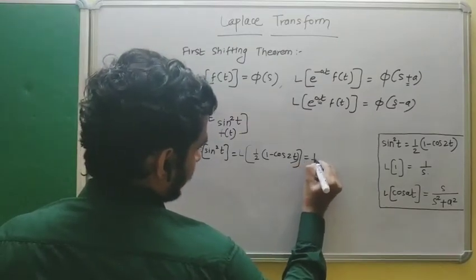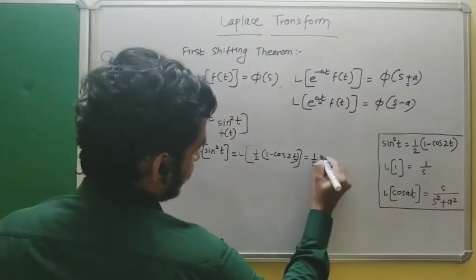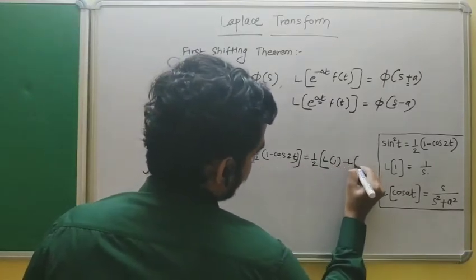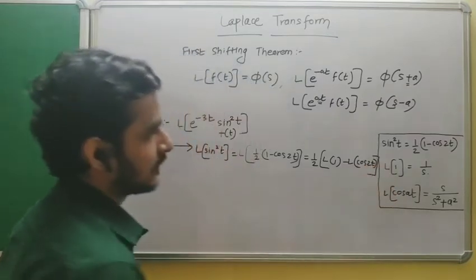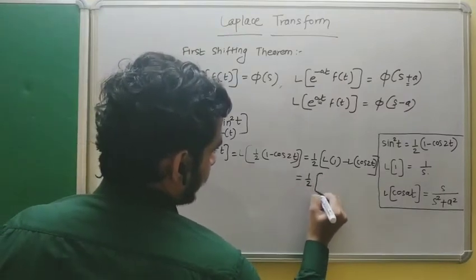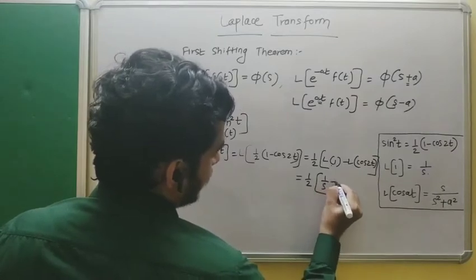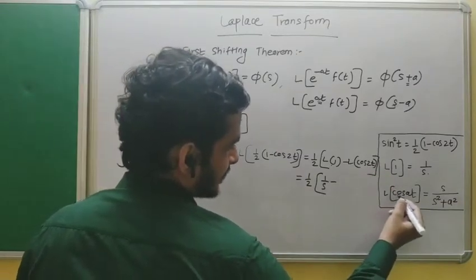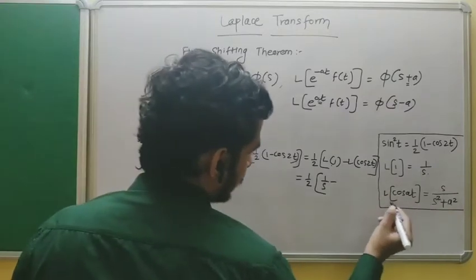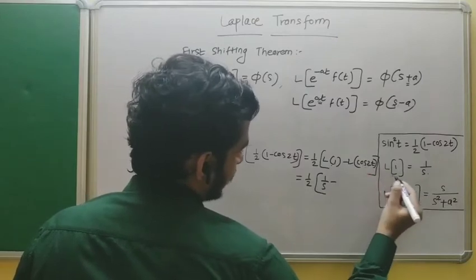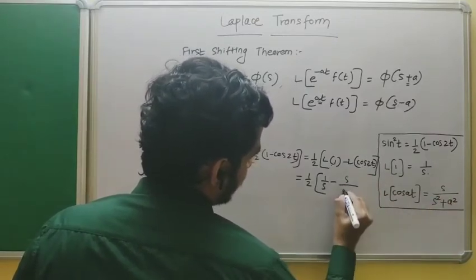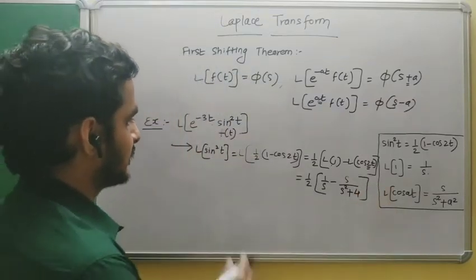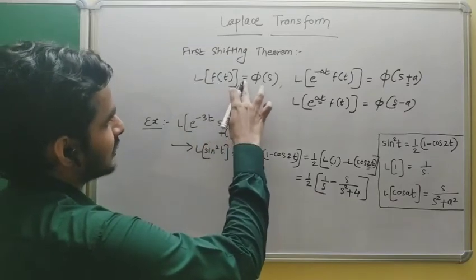So we need the Laplace transform of (1/2)(1 - cos(2t)). Taking 1/2 outside the bracket, it becomes (1/2)[L{1} - L{cos(2t)}]. We know L{1} = 1/s. For L{cos(2t)}, using the formula for cos(at) with a = 2, we get s/(s²+4). So φ(s) = (1/2)[1/s - s/(s²+4)].